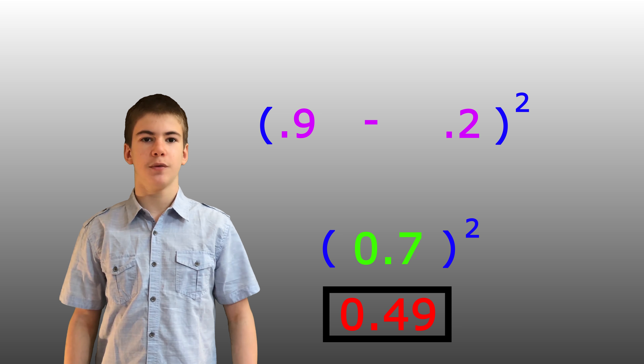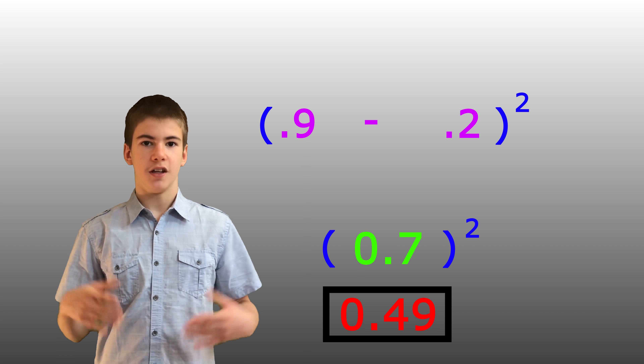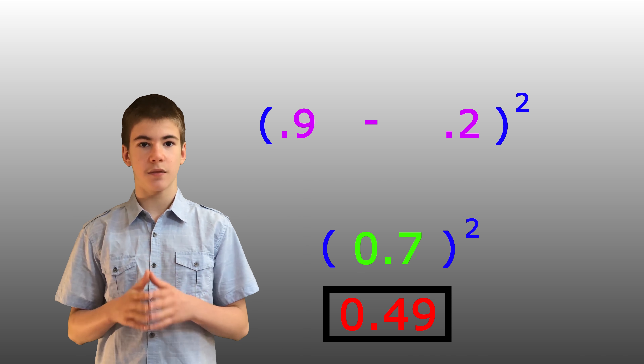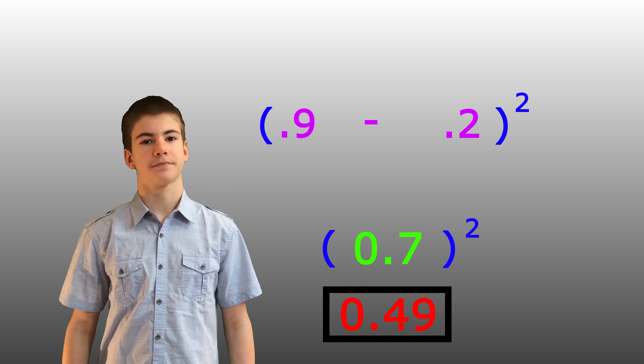This is because if you multiply a positive by a positive, you get a positive. And when we squared 0.7, we multiplied it by itself. This is why you can flip-flop the cost function without affecting its value or output. It's simply an added bonus, and I used this scenario in order to show you how squaring the cost function makes it non-negative.